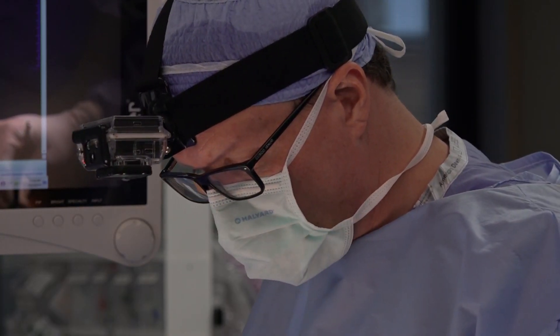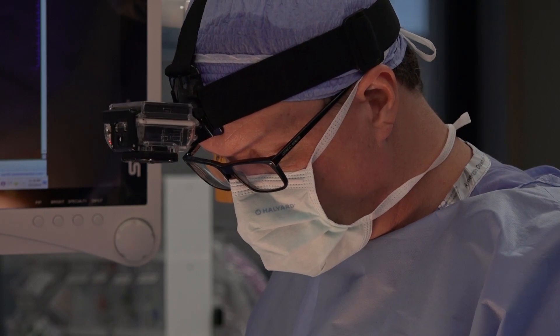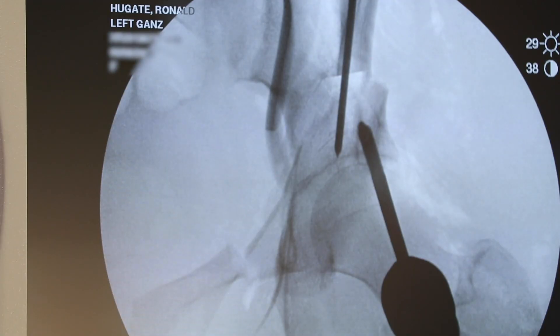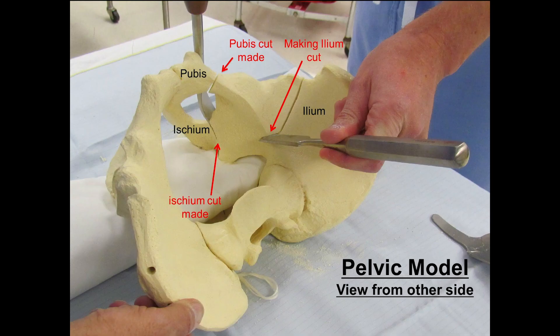Once the labrum is repaired, we have a system here at Panorama where, under the same anesthetic, we do the Ganz operation. The Ganz operation is essentially a series of controlled cuts. The goal is to move the cup over the ball, and the way we do that is with about a four-inch incision in the groin area. We go down and make three controlled cuts in the bone in order to move and spin the cup up and over the ball.